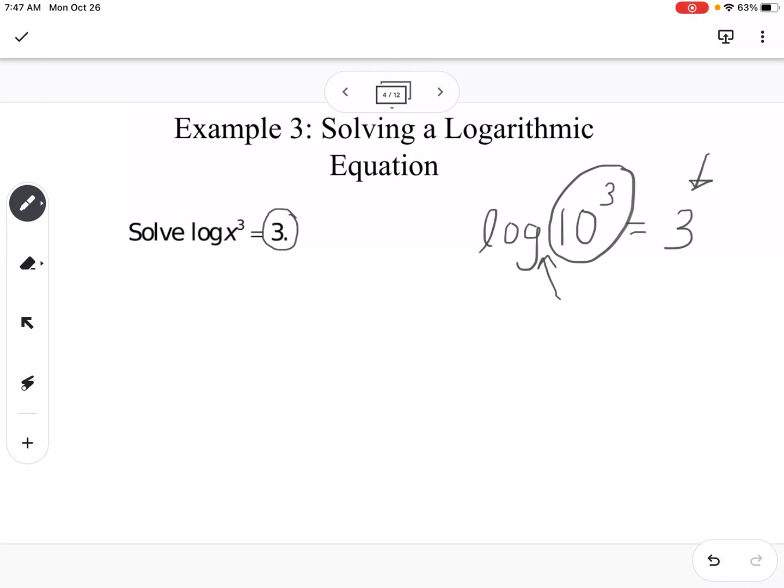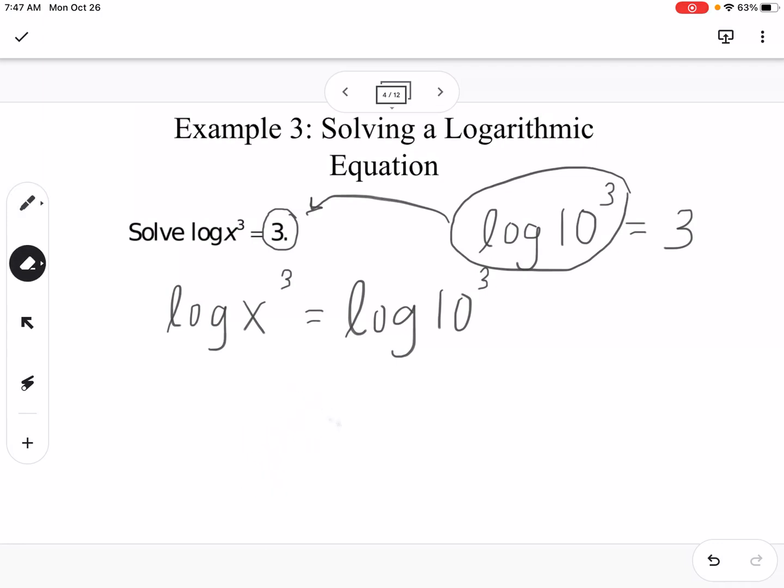We're going to substitute this in for our 3. So we can say log x to the third equals log 10 to the third. That means that since these are both log base 10, we can say that x to the third has to be equal to 10 to the third, so that means x equals 10.